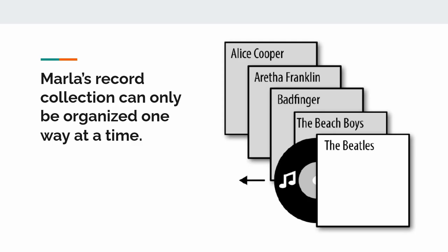She has only one copy of each record. If she wants to listen to an album, she needs to physically find it. Because she has only one physical copy, Marla must define one way to organize it. She also has only one way to play it sequentially — she has to start the record from the beginning and continue on throughout that particular side.